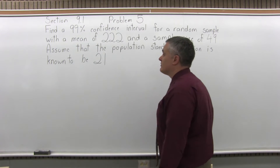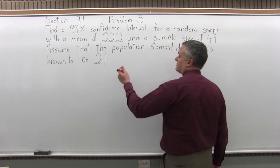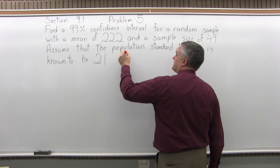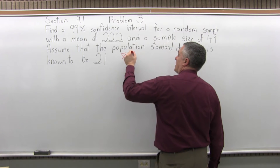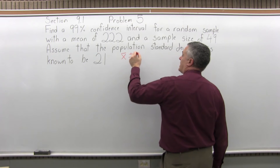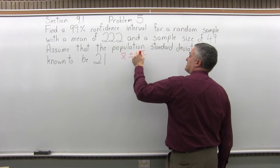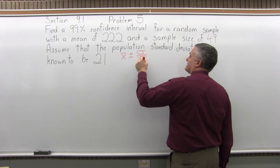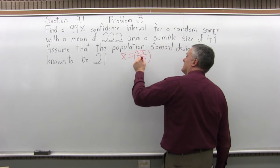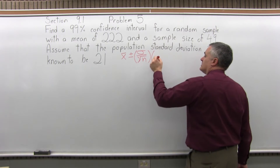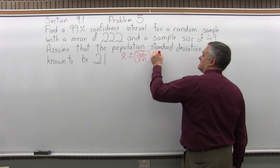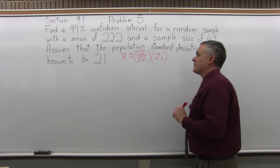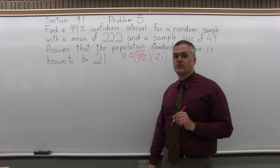Because it's asking for a confidence interval, we're going to use the confidence interval formula, which is x-bar plus or minus sigma, the standard deviation, over square root of n, the sample size, times z sub c, the confidence coefficient. That's the formula.